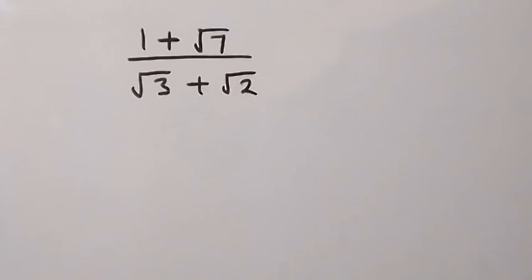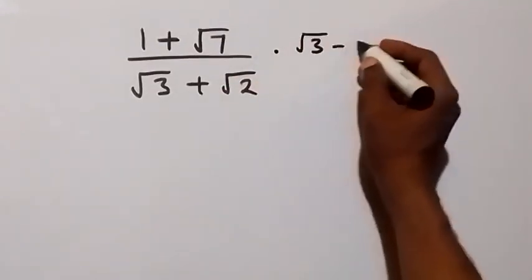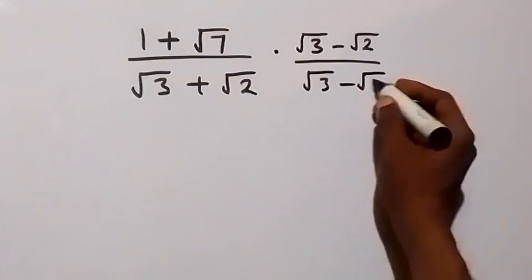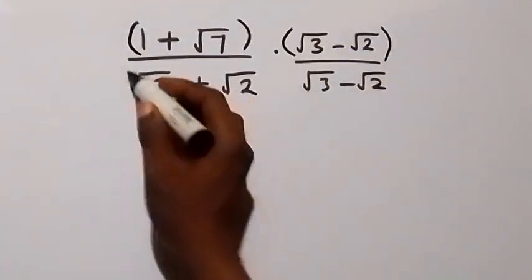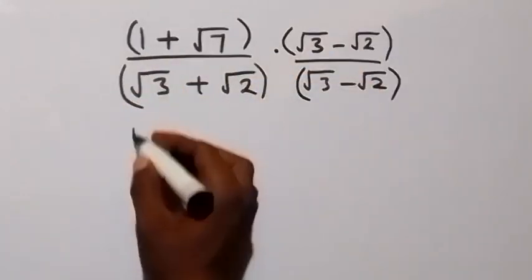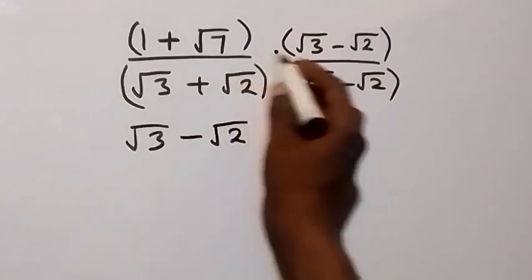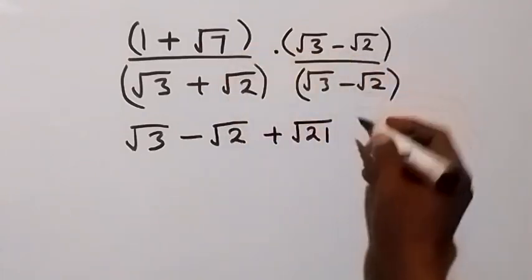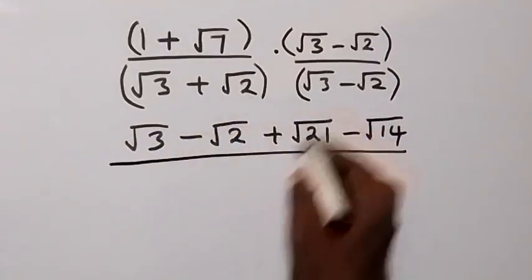From here we can rationalize this and multiply by the conjugate. So we have times root 3 minus root 2, and also divide by root 3 minus root 2. Then when we open the bracket: 1 times root 3 is root 3, 1 times minus root 2 is minus root 2, root 7 times root 3 is plus root 21, root 7 times minus root 2 is minus root 14.